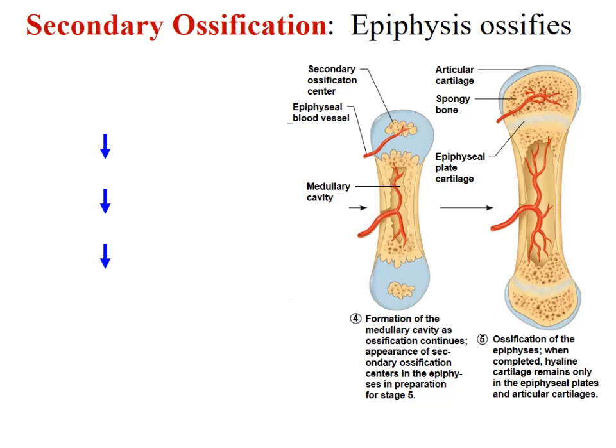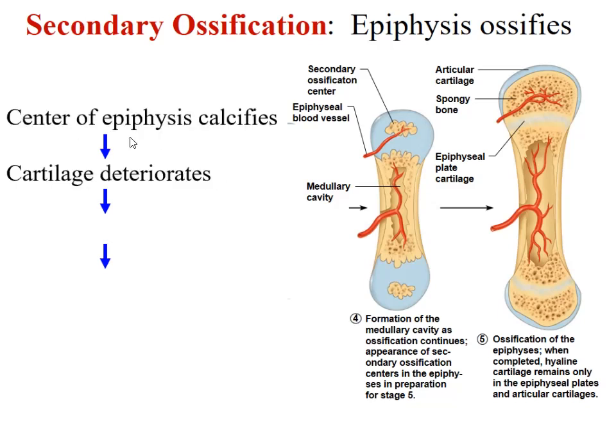Elastic cartilage is found in the ear. Fibrocartilage is found in those thick chunks of cartilage in the discs of the spine. Don't let that trip up your answer choice — the growth plate and articular cartilage are always going to be hyaline cartilage.